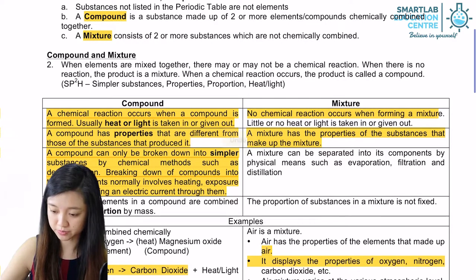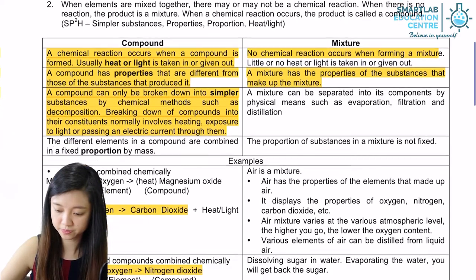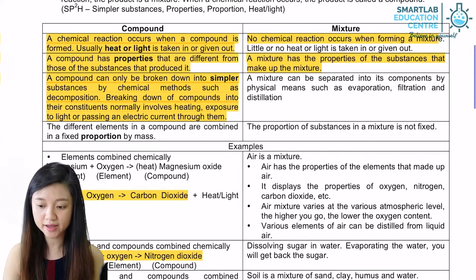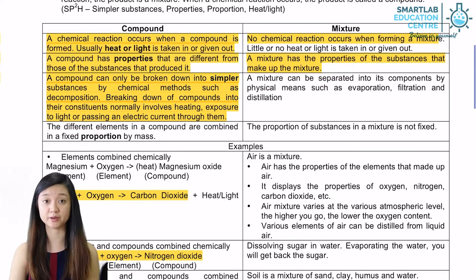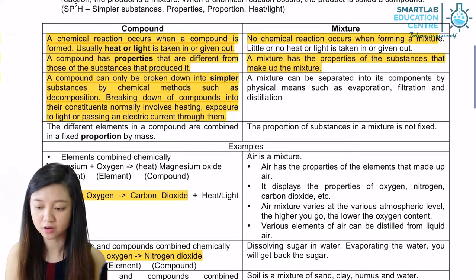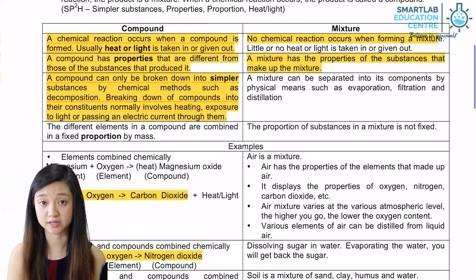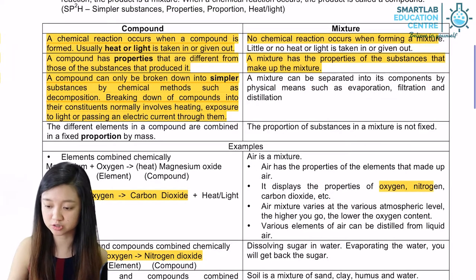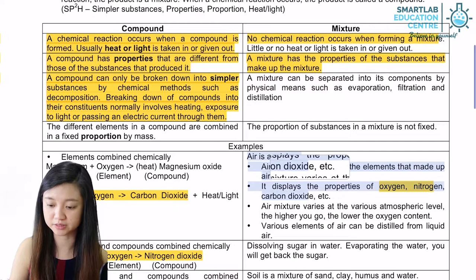Let's look at the example below. We have air. Air has the properties of the elements that make up air. In air, it actually has oxygen, nitrogen and carbon dioxide. Hence, it will display the properties of oxygen, nitrogen and carbon dioxide.